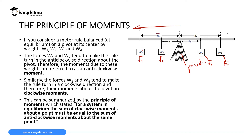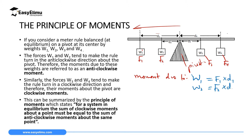In this case, W1 has a distance d1 to the pivot. The moment due to W1 is F1 times d1, the perpendicular distance to the pivot. The moment due to W2 is F2 times d2, that is the perpendicular distance from the pivot.